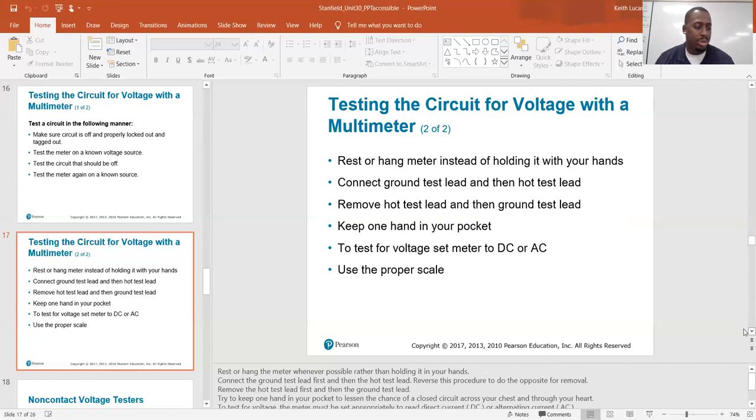So why did they say put one hand in your pocket? Because you don't want to become part of the circuit. If you have both hands on the unit and you get shocked, the voltage is going to go through you. You're going to get electrocuted. You have a better chance at preventing injury if you only have one hand in the unit.